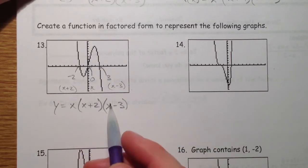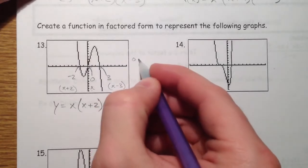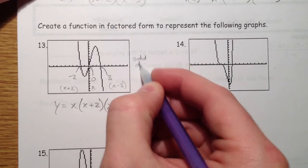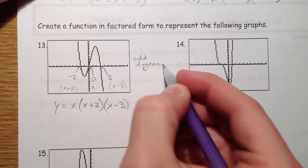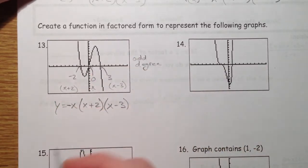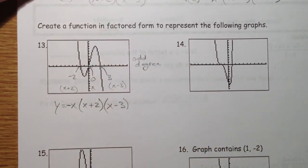Now I just want to double check with degrees. So it's 1, 2, 3. Degree 3. So that makes sense. It's odd degree. But it's going down and to the right. And so I need a negative out front in order for it to be correct.